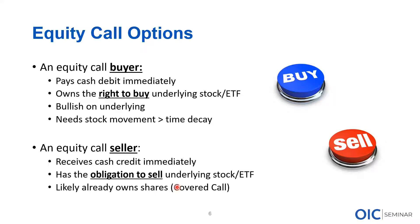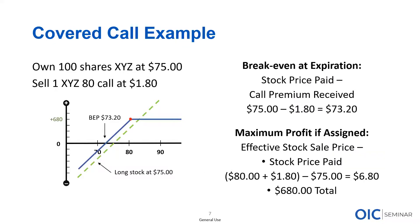Equity options can take on any of these forms depending on current circumstances — where is the demand, which direction are investors looking to speculate or protect? Call buying drives where these skews land. In the past 18 months we've seen more equities exhibit symmetrical or inverted skews because call buying has become more popular. Now, an equity call seller receives cash immediately into their account in exchange for taking on the obligation to sell shares of stock, which will show up as a short position and a debit.